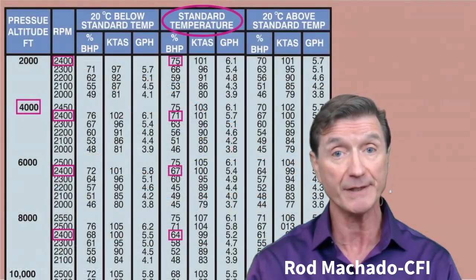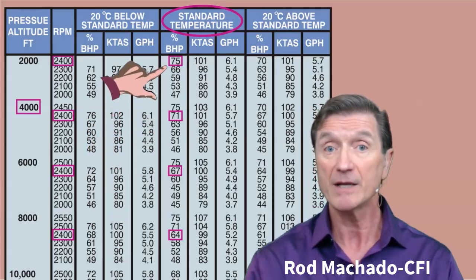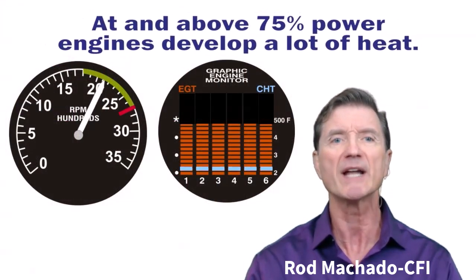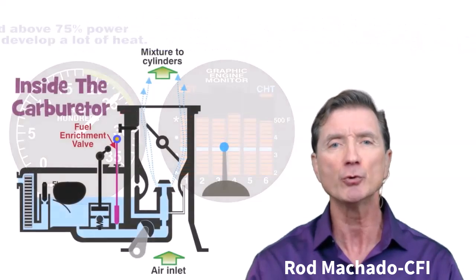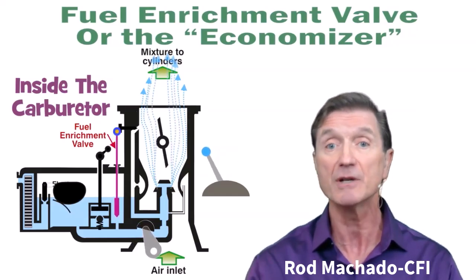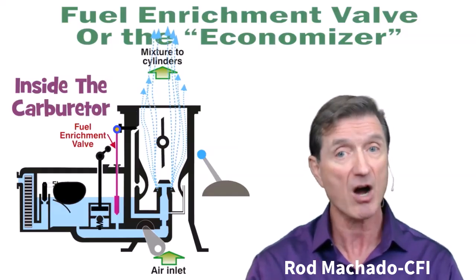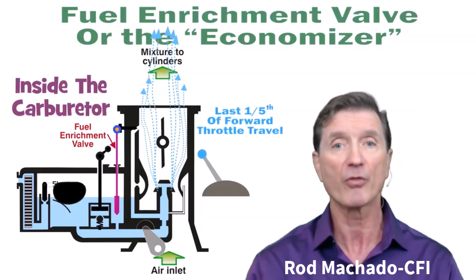In these conditions, the typical airplane engine gets all the fuel it needs along with all the oxygen necessary to burn that fuel properly. For the most part, you just can't pump too much fuel into the engine at sea level, because at density altitudes below 4,000 feet your typical airplane engine can develop 75% or more of its maximum rated power. At or above 75% power, the engine develops a lot of heat and counts on cool fuel entering its combustion chambers to help cool it. This is why all engines have a fuel enrichment valve, which allows approximately 15% more fuel to flow into the engine than is needed for normal combustion when the throttle is moved to its full forward or takeoff position — typically the last one-fifth of forward throttle travel.